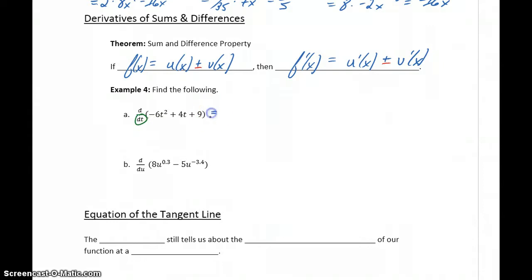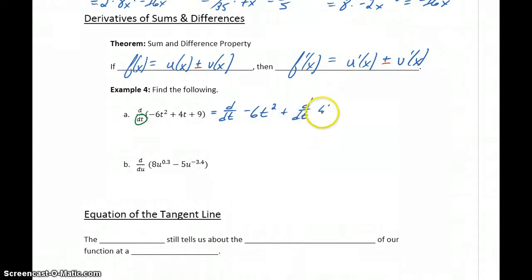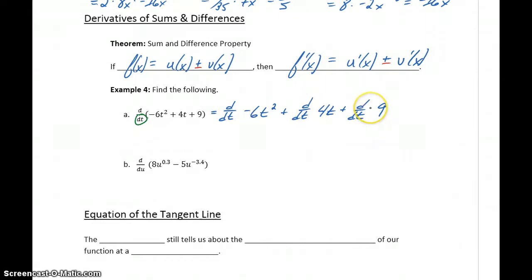So in this case, we can rewrite this problem as an expression where we're differentiating term by term. We'll rewrite this as the derivative of negative 6t squared, plus the derivative of 4t, plus the derivative of 9. So we're taking that derivative and essentially distributing or breaking it up across those different terms. And now we can just focus on each of these power functions, sometimes with that constant multiple, one at a time.